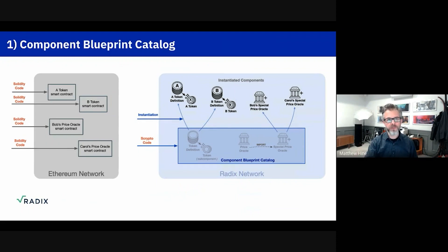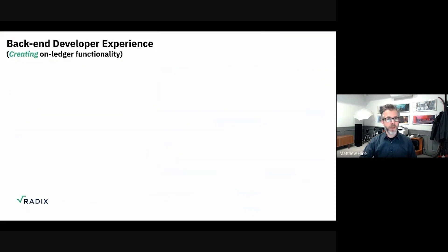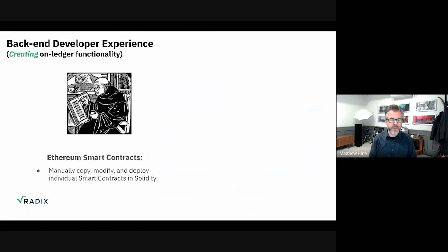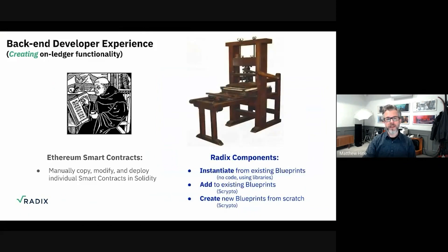So what does this actually give you as a developer? This is primarily focused on that backend developer who's creating on-ledger functionality. The difference here — to make a kind of silly metaphor — is doing it on Ethereum is kind of like being a medieval scribe. Every time you want to write a smart contract, you have to write out the code into your own book, and that book becomes a smart contract that someone else can read. And if you want a token just like someone else's token, you pull their book off the shelf and you manually copy it down. It's literally copy-pasting code. From the ledger's point of view, you might as well have written it from scratch — it doesn't know the difference. The Radix approach is more like a printing press. We have blueprints and you can create many copies from them, and you can modify the blueprints.